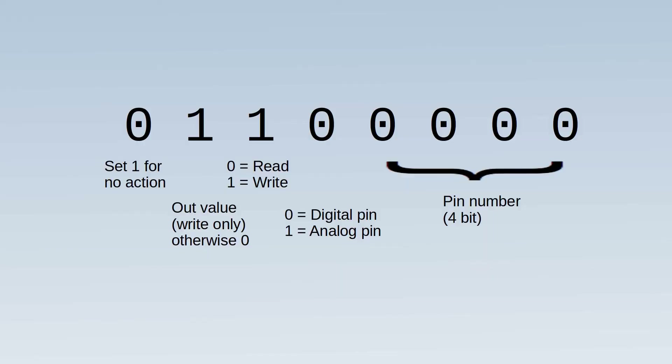The SPI protocol only covers the transmission of data over the wire — it doesn't provide a protocol explaining the data being transmitted. I've therefore created my own protocol defining how to pass information. As data is transmitted a byte at a time, I've used the individual bits for different purposes. Looking at the outgoing byte from the Raspberry Pi to the Arduino: the first four bits (least significant) are the address of the digital or analog port, the next bit determines if the pin is digital or analog, and the following bit indicates whether to read or write to the pin.